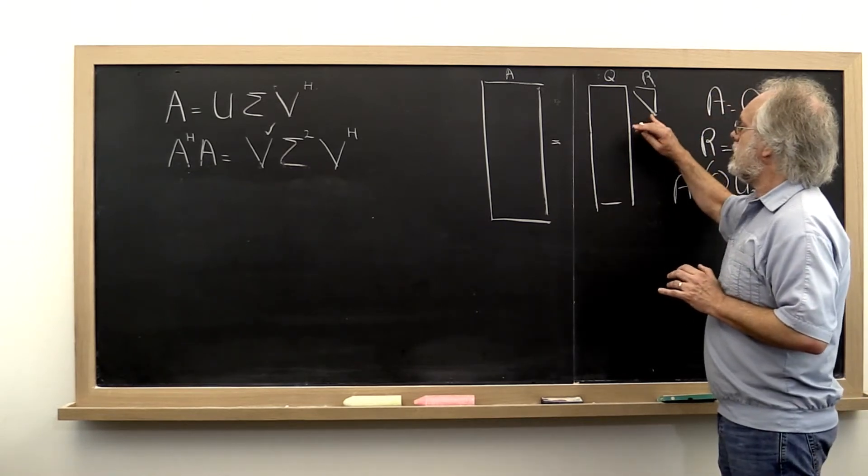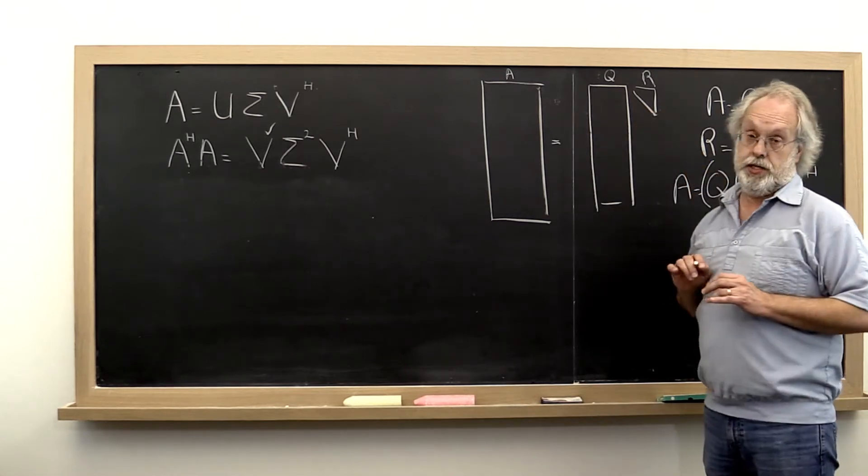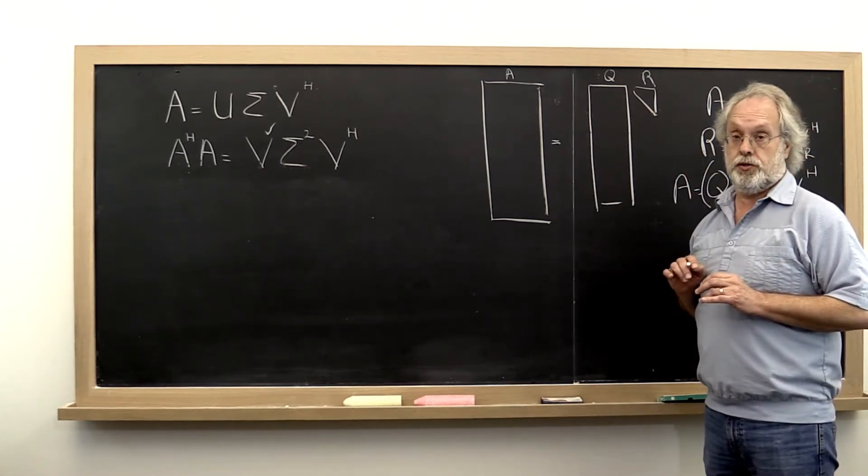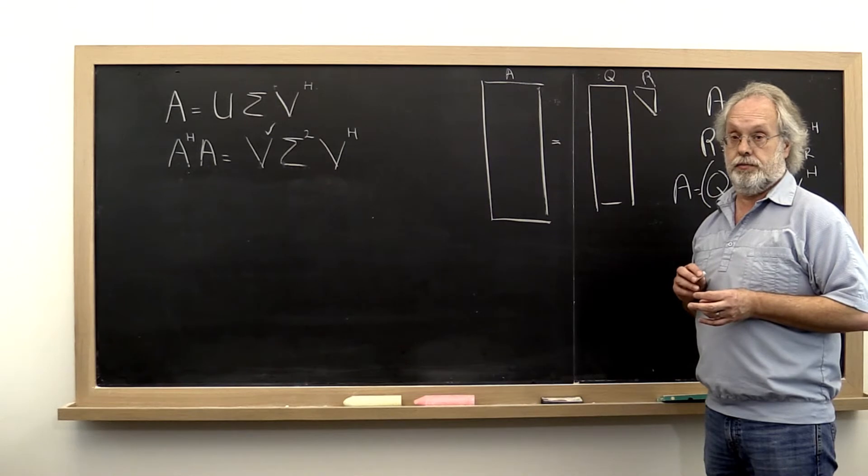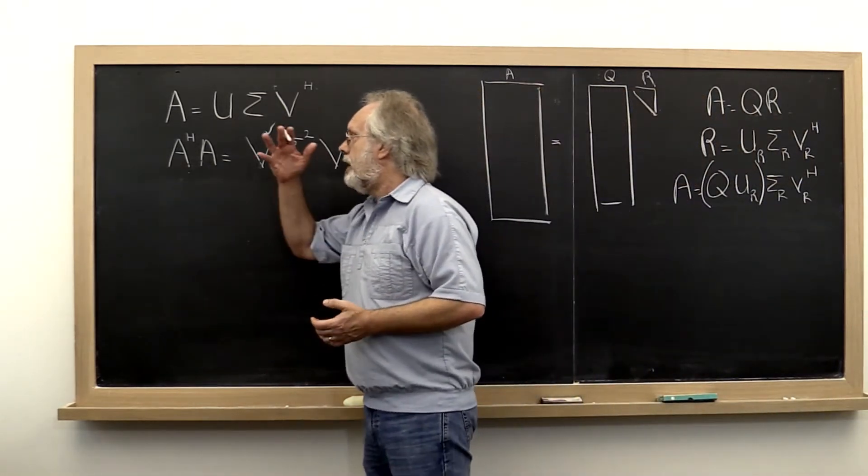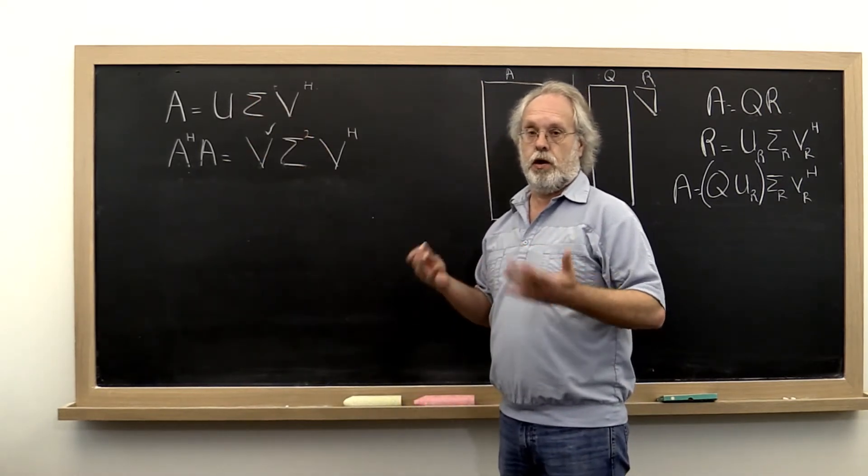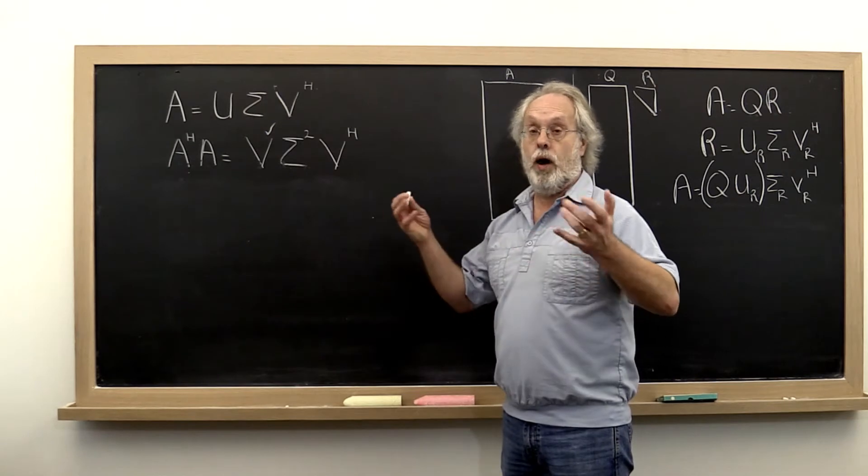So the more important thing is that we now have created a square matrix that we want to compute the singular value decomposition of. So let's now go over here and simply say, now A is square and we're trying to compute the singular value decomposition of a square matrix. Now what?